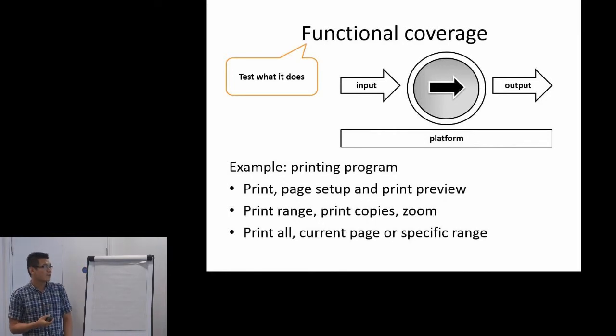For functional coverage, basically you test what it does. You actually want to test that you can print data according to your expectation, or like if you select the print range, then the output should be okay.